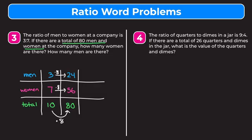Our last example says the ratio of quarters to dimes in a jar is nine to four. If there are a total of 26 quarters and dimes in the jar, what is the value of the quarters and dimes? We'll use a similar method to example three, but with one extra step since we need to find the value of the coins. We set up a three-part table: quarters, dimes, and total. The ratio is nine to four, and nine plus four is 13, so there are 13 total parts in our ratio.